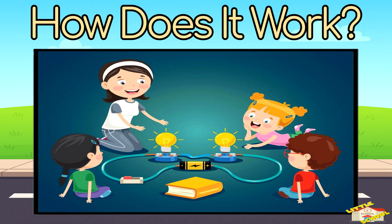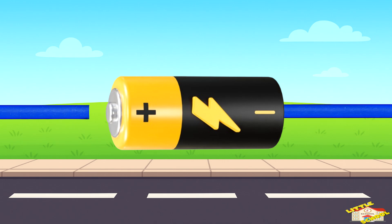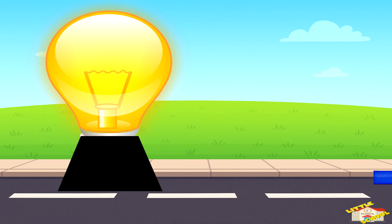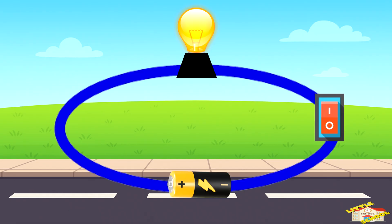How does it work? First, you connect one end of the wire to the battery. Next, you connect the other end of the wire to the light bulb. And then you connect the bulb back to the battery using another wire.